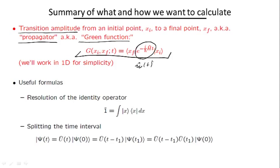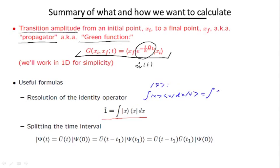The first formula listed here we have already discussed in the second lecture last week. This is the so-called resolution of the identity operator. The fact that it is the identity operator means that if we have an arbitrary wave function psi and we act by this operator on psi, what we get is the integral of the matrix element x|psi times the ket vector |x⟩ dx, and this is identically equal to psi itself.